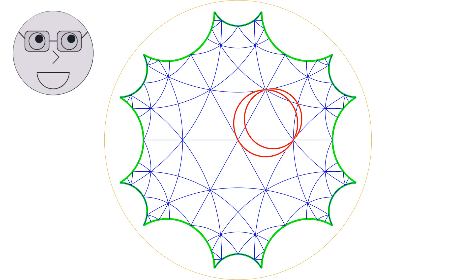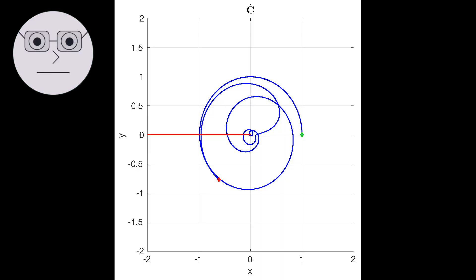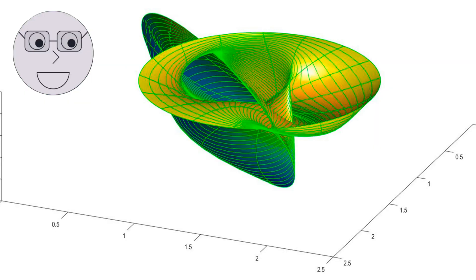Hyperbolic surfaces are another type of Riemann surface, which are two-dimensional complex manifolds with a constant negative curvature. They have important applications in geometry and topology. Algebraic curves are another type of Riemann surface, which are complex manifolds that can be described by algebraic equations. They have important applications in algebraic geometry and number theory. The classification of Riemann surfaces is an active area of research in mathematics, and there are many open questions and conjectures in this field.